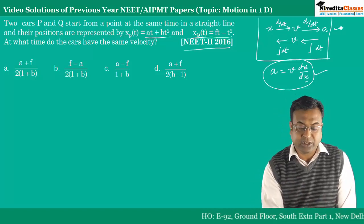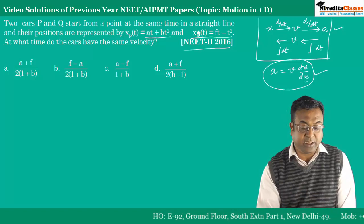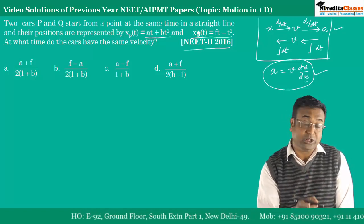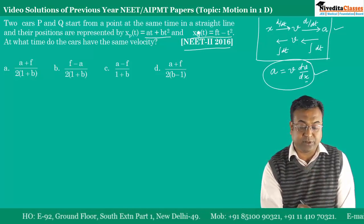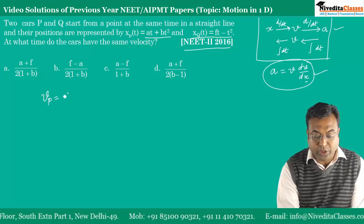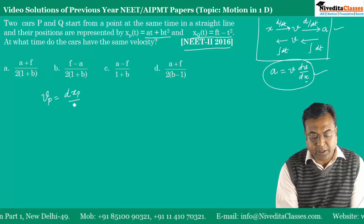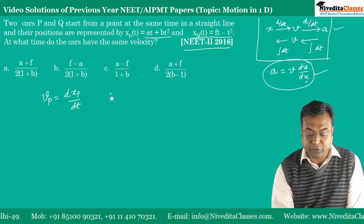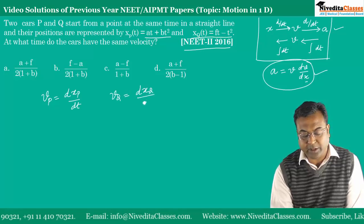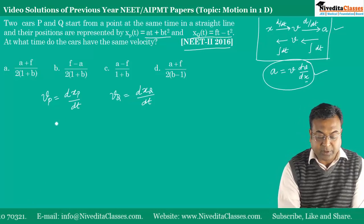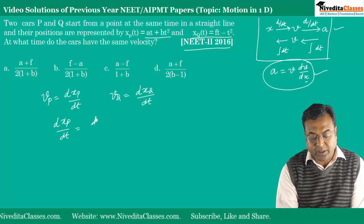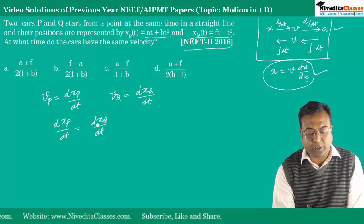Here, the relations given are in terms of t, and we are given position. So first, how do we find velocity from position? By taking the derivative. The velocity of car P will be dx_P/dt, and similarly the velocity of car Q will be dx_Q/dt. These two are equal. So dx_P/dt = dx_Q/dt.